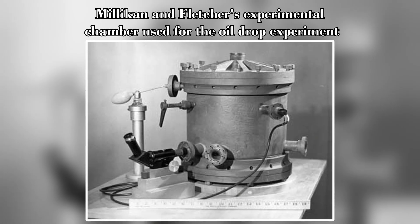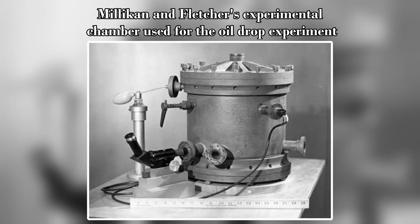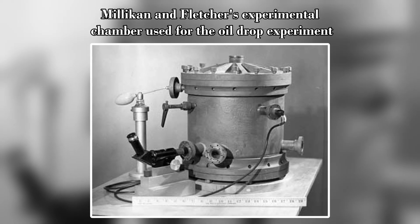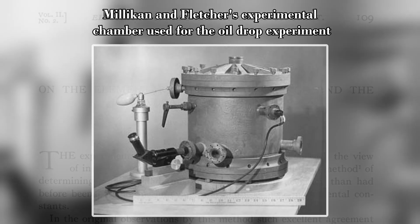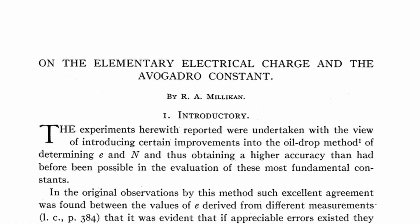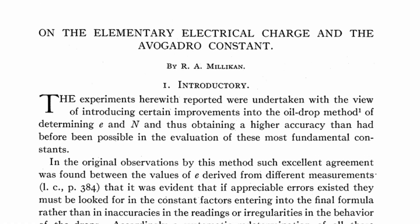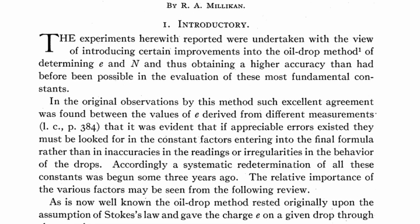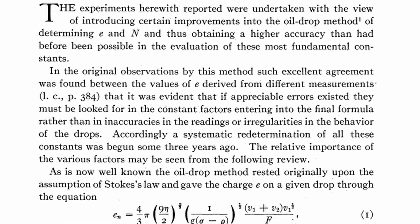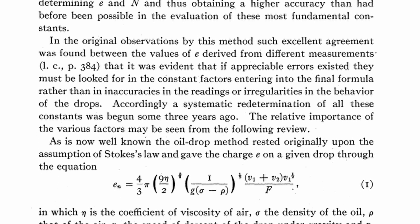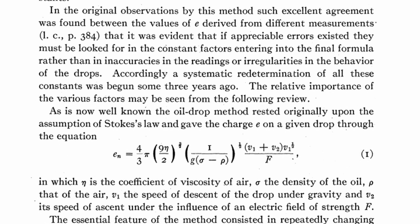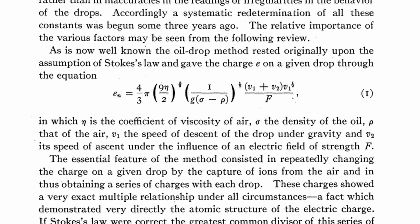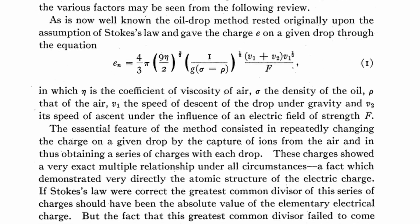This drove Millikan to go back to the lab, refining his experiment even more and collecting much more data. By 1913, Millikan had published his findings once again, showing the elementary charge to be 1.592 × 10⁻¹⁹ coulombs, with an uncertainty factor of only 0.2%. This 1913 paper ruled out any other doubts and claims made about the charge of the electron, and this value was accepted by scientists.